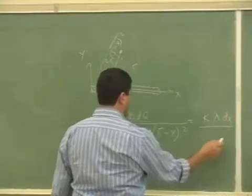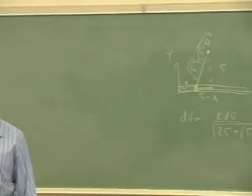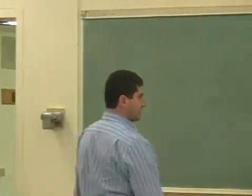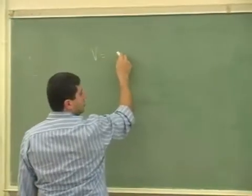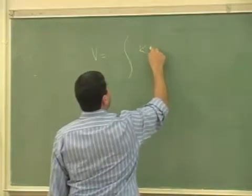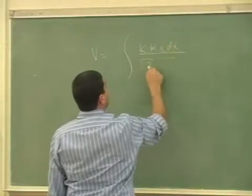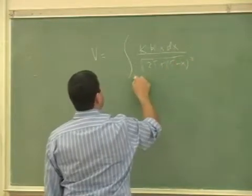Square root of 25 plus (5 minus x) squared. Then I say dq is lambda dx, so it's kappa x over this whole thing. Then at that point I put lambda is equal to kappa x. So now the potential is going to be equal to integral k lambda, which is kappa x dx, over square root of 25 plus (5 minus x) quantity squared from 0 to 10.